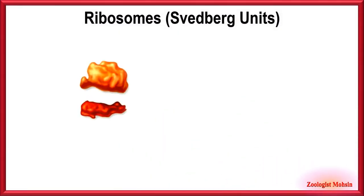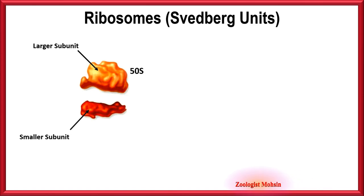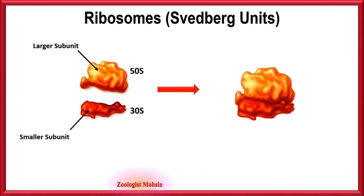Ribosomes are protein-synthesizing organelles in cells. They consist of two subunits: one large subunit and one smaller one. The Svedberg units for the larger subunit are 50S, while the smaller one is 30S. When both units are assembled together...